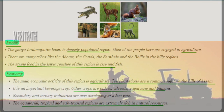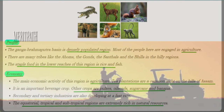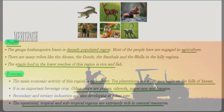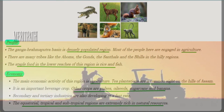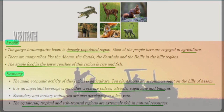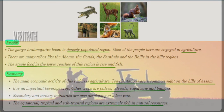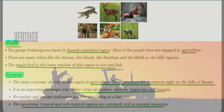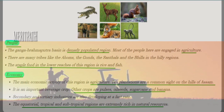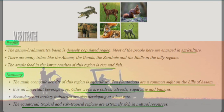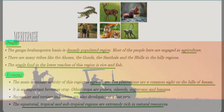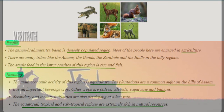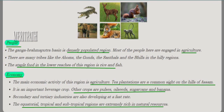The main economic activity is agriculture. Tea plantations are a common sight in the state of Assam, and tea is an important beverage crop. Other crops include pulses, oilseeds, sugarcane, and banana. Secondary and tertiary industries are also developing here. These regions — equatorial, tropical, and subtropical — are extremely rich in natural resources.